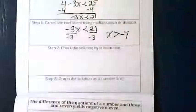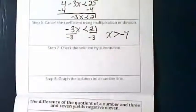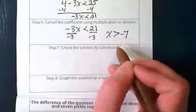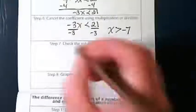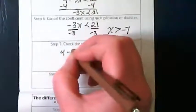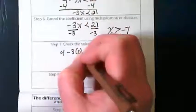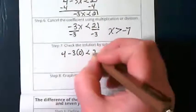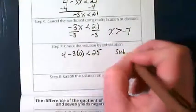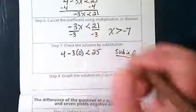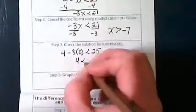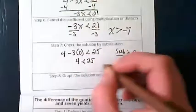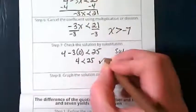What number should we sub in to test this time? It is greater than negative 7, so my favorite number to sub in, if possible, is 0. So let's do 4 minus 3 times 0 is less than 25. We are subbing in 0. That becomes 4 is less than 25. Is that a true inequality? That means that we have solved this correctly, and we can graph it.